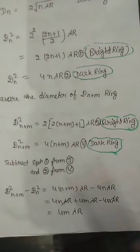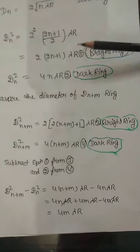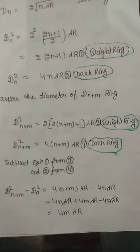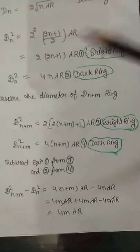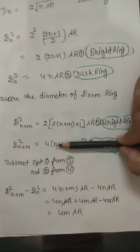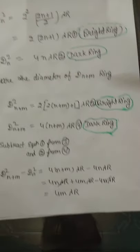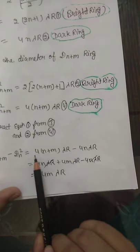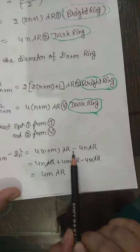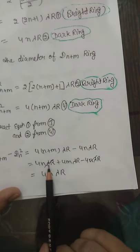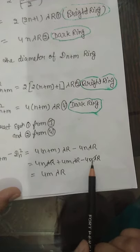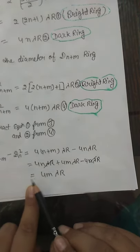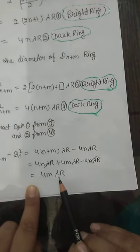Now we subtract equation 1 from equation 3 — that is, we subtract the 1st bright ring equation from the 3rd. Similarly, we subtract the 2nd dark ring equation from the 4th. The result is: 4(n+m) × lambda × R minus 4n × lambda × R, which gives 4m × lambda × R. The 4n × lambda × R terms cancel, leaving 4m × lambda × R.